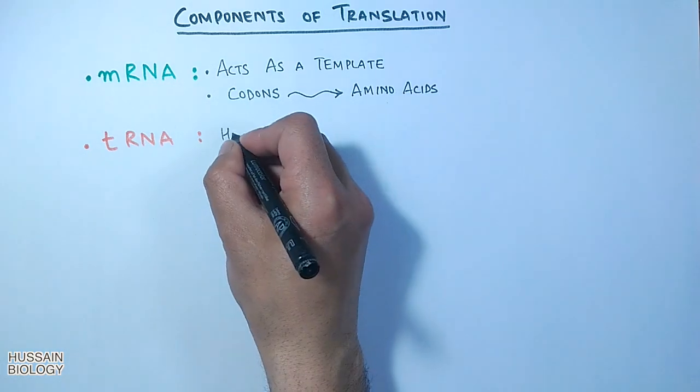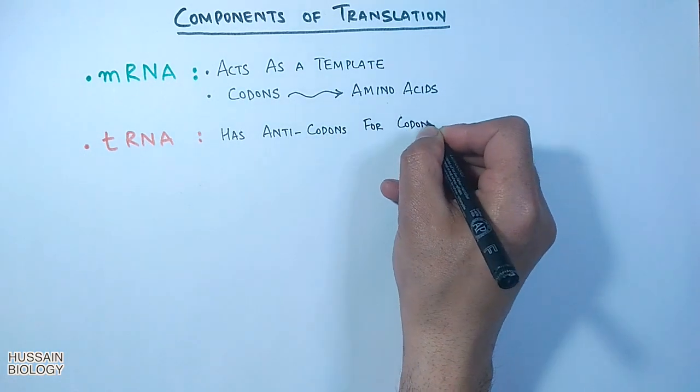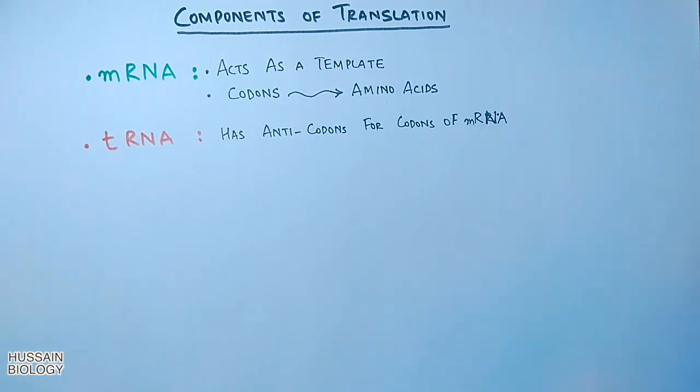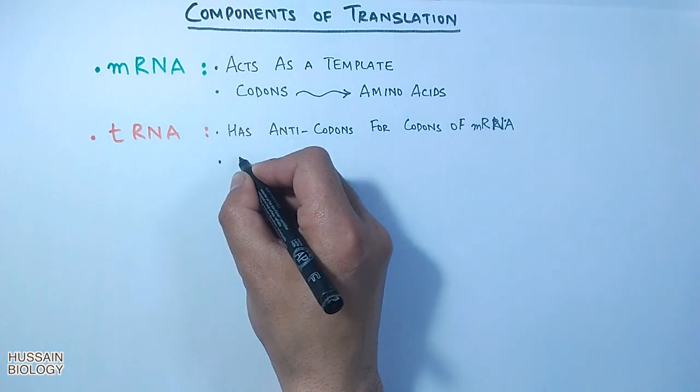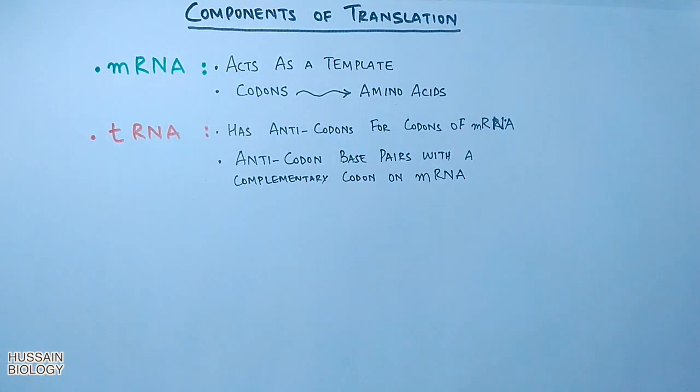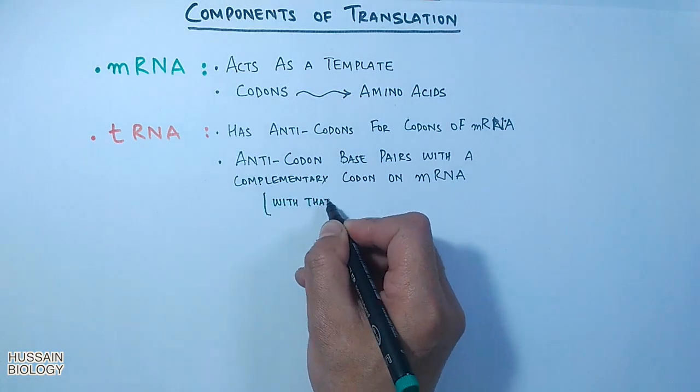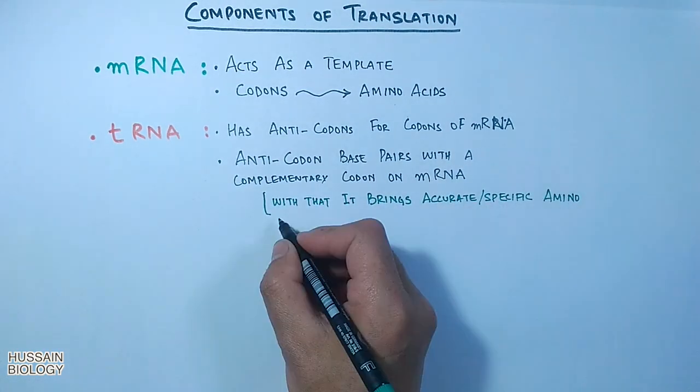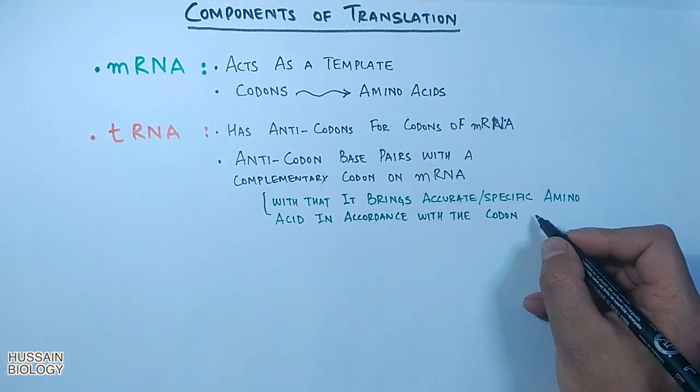Next is the tRNA molecule, which has complementary sequences for codons of mRNA, and we call them anticodons. The anticodon base pairs with the codon of mRNA. With that mechanism, it brings the right amino acid to the growing chain according to the codon present on mRNA.